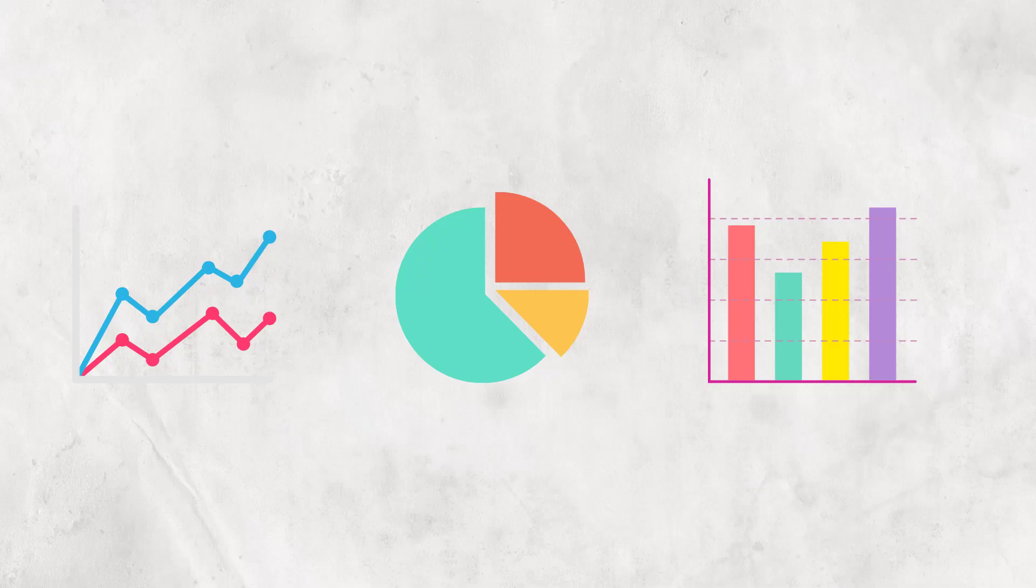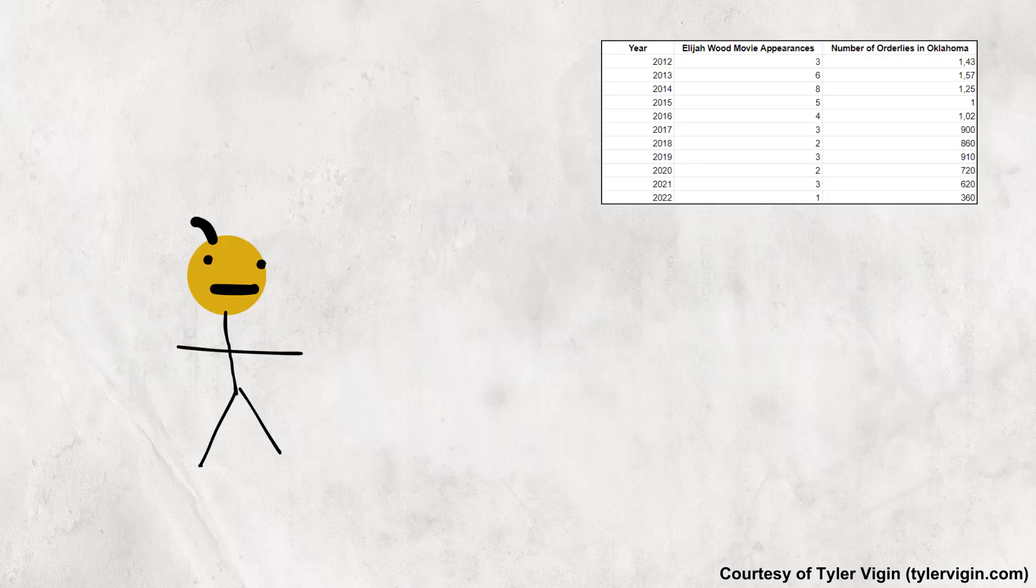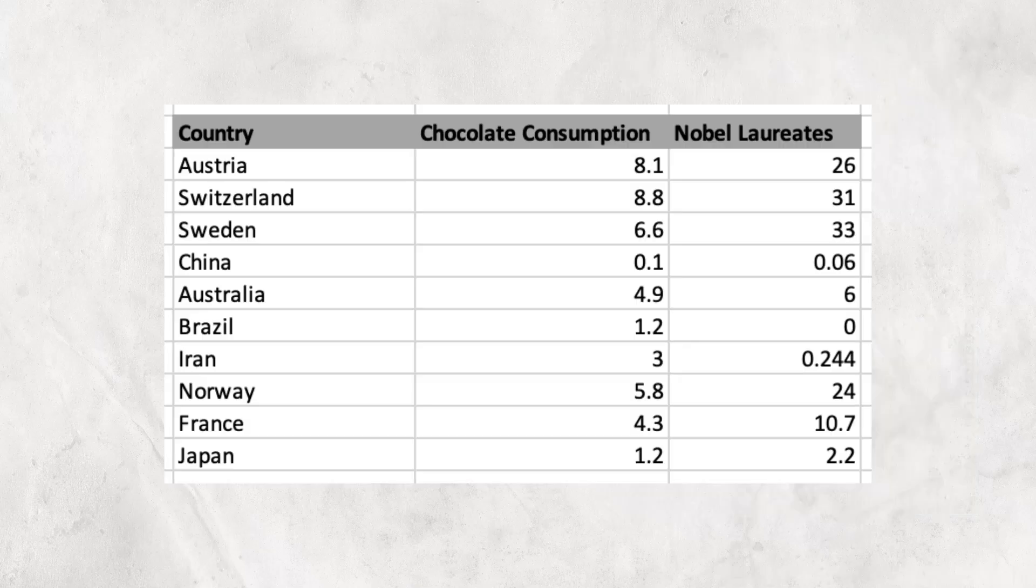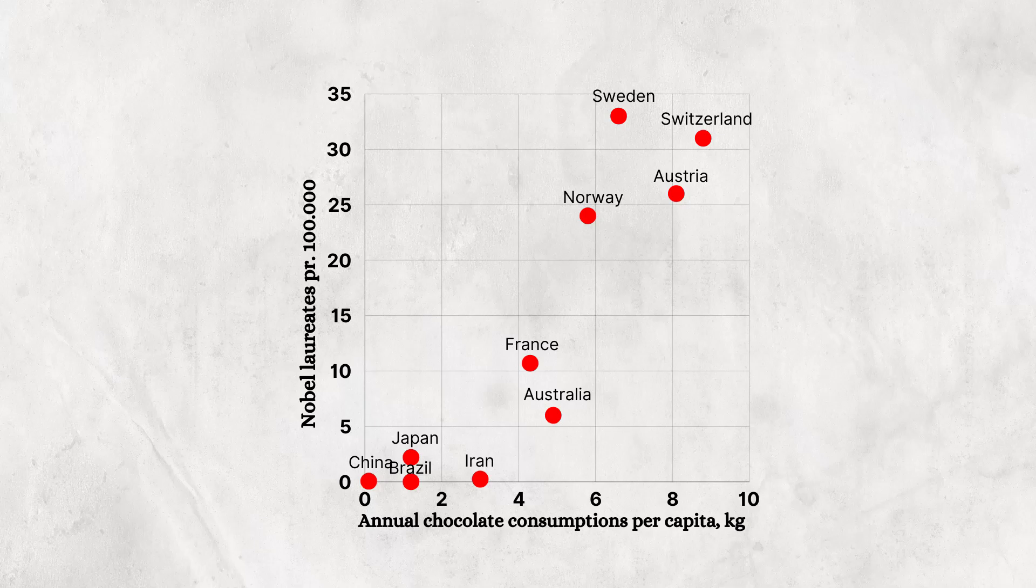Graphs and charts are an absolutely essential part of statistics. They provide a visualization of statistical data so that it's easier for us humans to interpret and understand. Take a look at these data showing the annual chocolate consumption per capita for 10 different countries, as well as their number of Nobel laureates per 100,000 capita. Fairly hard to interpret, right? If you instead plot it on a graph, it's much easier to see if there's any pattern.